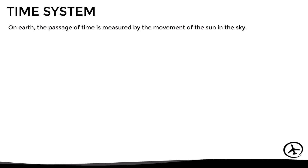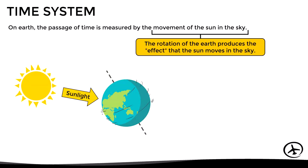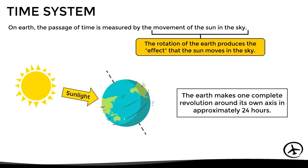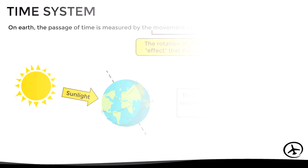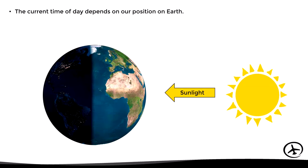In fact, it is the rotation of the Earth around its own axis that produces the effect that the sun moves in the sky. The Earth makes one complete revolution around its own axis in approximately 24 hours, and that period of time is what is considered a day. The current time of day depends on our position on Earth, as the sun always shines on one side while the other side remains in darkness.